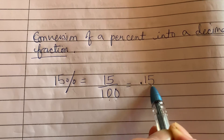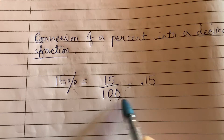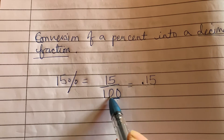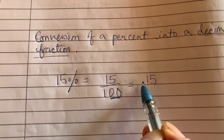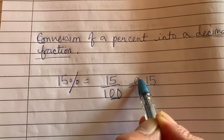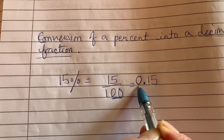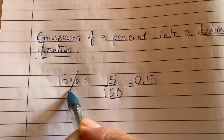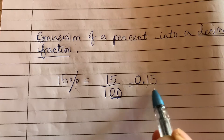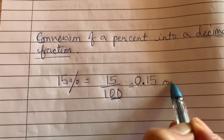Moving two places to the left: one, two — that is tens and hundredths. I am putting the decimal point, and since there is no number before the decimal, I put a zero there. So 15 percent equals 0.15. This is the answer in decimal form.